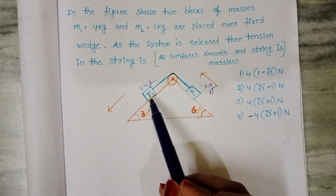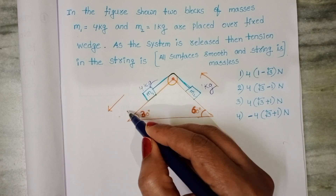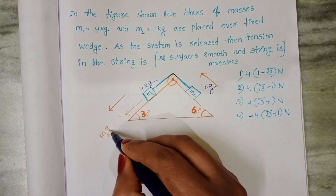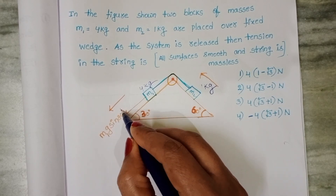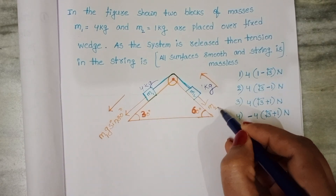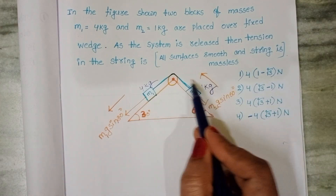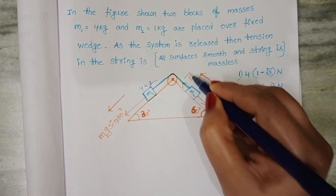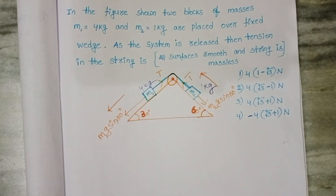We know weight is resolved into two components. The component of weight along the inclined plane in the downward direction is M1·G·sin 30°. Similarly, the component for M2 is M2·G·sin 60°. The tensional force T acts upward on M2 and the tension T with acceleration acts in the downward direction on M1.